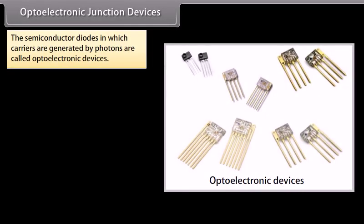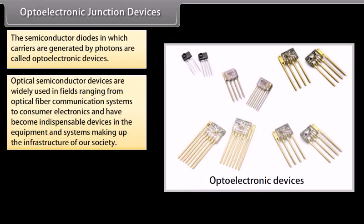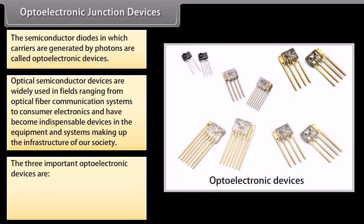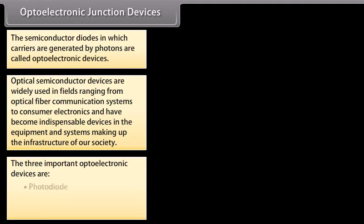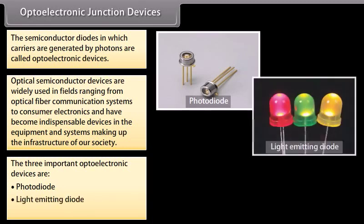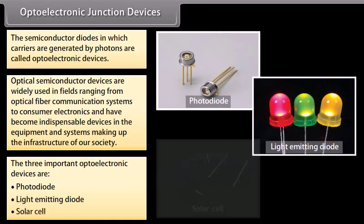Optoelectronic junction devices: The semiconductor diodes in which carriers are generated by photons are called optoelectronic devices. Optical semiconductor devices are widely used in fields ranging from optical fiber communication systems to consumer electronics, and have become indispensable devices in the infrastructure of our society. The three important optoelectronic devices are: photodiode, light emitting diode, and solar cell.